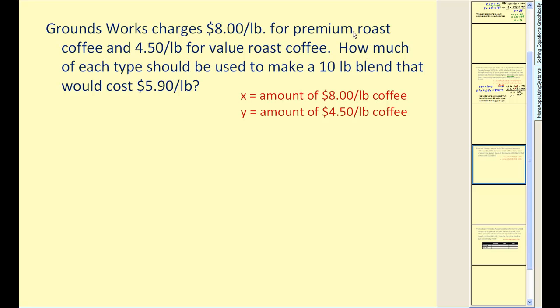Now let's take a look at a different type of problem. Groundworks charges $8 per pound for premium roast coffee and $4.50 for value roast coffee. How much of each type should be used to make a 10 pound blend that would cost $5.90 per pound. Again, this is important that we identify what our variables represent. X will be the amount of $8 per pound coffee and y will equal the amount of $4.50 per pound coffee. Since our blend will weigh 10 pounds, we can conclude that x plus y must equal 10.